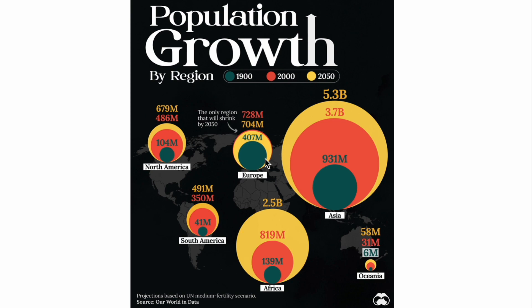Moving on to Europe: in 1900 it was 407 million people, in 2000 it was 728 million, and by 2050 they actually think it's going to shrink to 704 million people. This looks like it will be the only region that shrinks if the data continues the way it's moving.